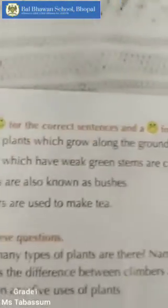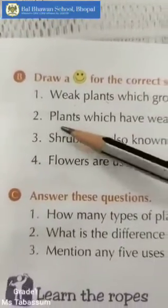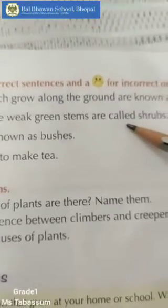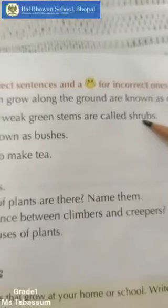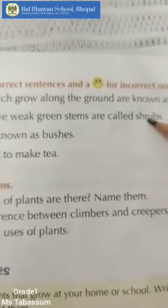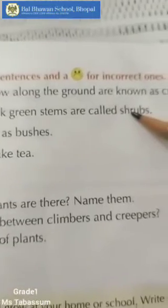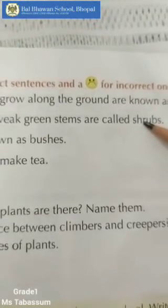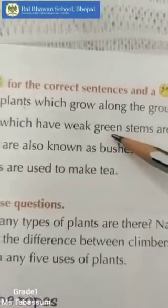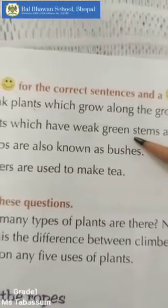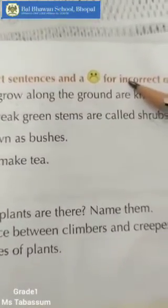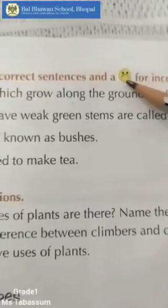Number 2: Plants which have weak green stems are called shrubs. Is it correct? No. Because shrubs have woody stems, and weak and soft green stems belong to herbs. So the sentence is incorrect, and you are going to make a sad face.